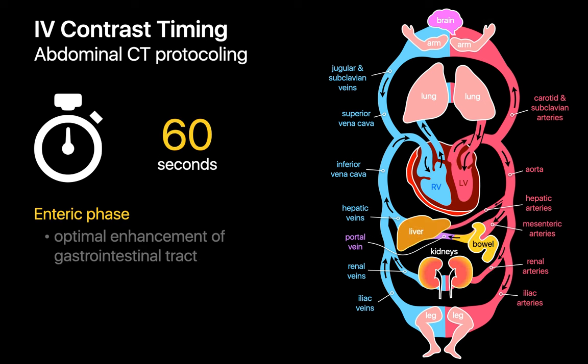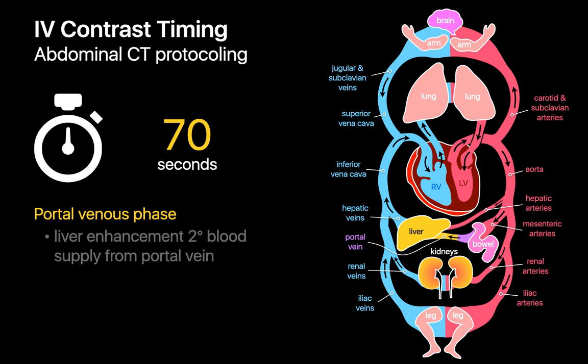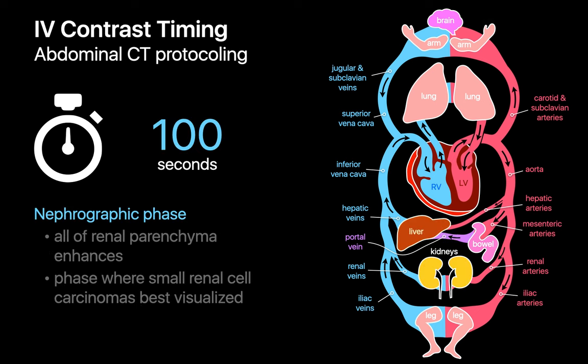At the 60 second mark, we've entered the enteric phase of enhancement, where enhancement of the GI tract is most optimal. At 70 seconds, we've reached the portal venous phase of enhancement, when liver enhancement is predominantly being driven by contrast that passed through the bowel and is now arriving via the portal vein. At 100 seconds after injection, we've reached the nephrographic phase of enhancement. Enhancement of normal renal parenchyma will probably appear as homogeneous as it will be at this point, and this tends to be a good time to pick up small RCCs.